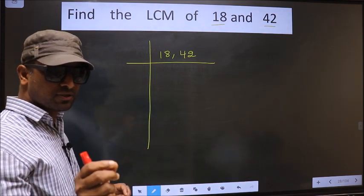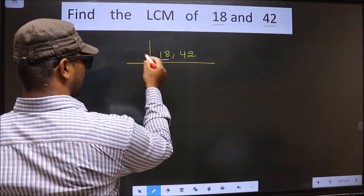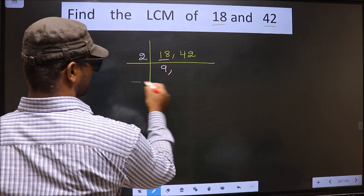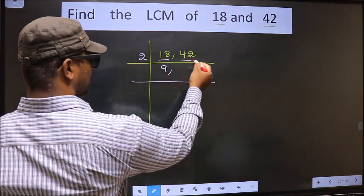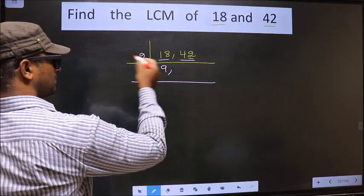Now we should focus on the first number that is 18. 18 is 2 nines. The other number 42, last digit 2, even. So this number is divisible by 2.